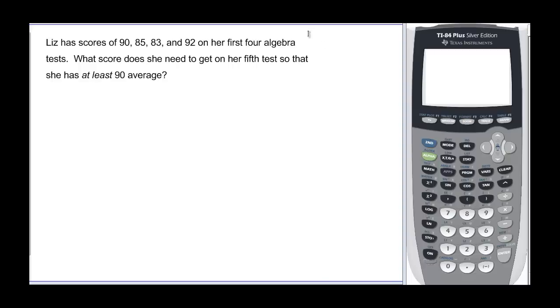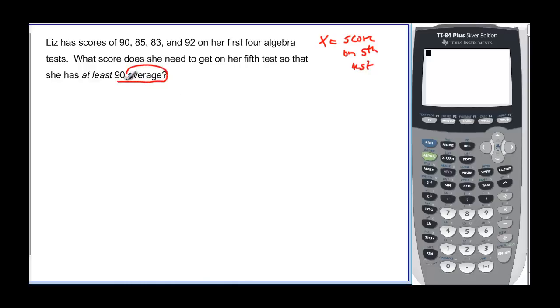What we need to know, what our unknown is here, is x is going to be equal to the score on the fifth test. But the one thing you have to remember is that whatever you have on one side has to be the other. And on this side of the at least we had the word average. We want a 90 average, so we need the average of the five has got to be at least 90 average.